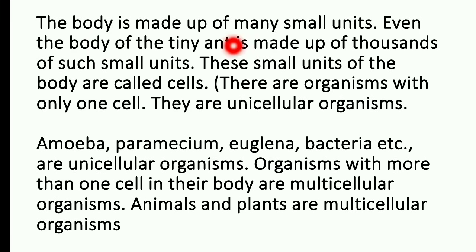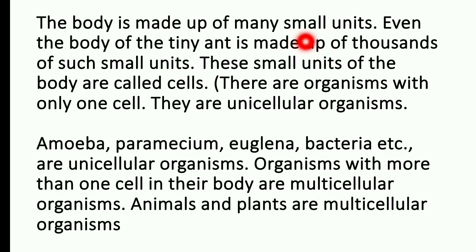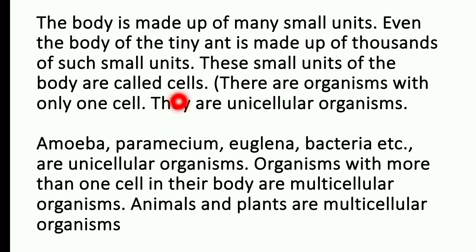The body is made up of many small units. Even the body of a tiny ant is made up of thousands of such small units. The small units of the body are called cells. There are organisms with only one cell — they are called unicellular organisms.